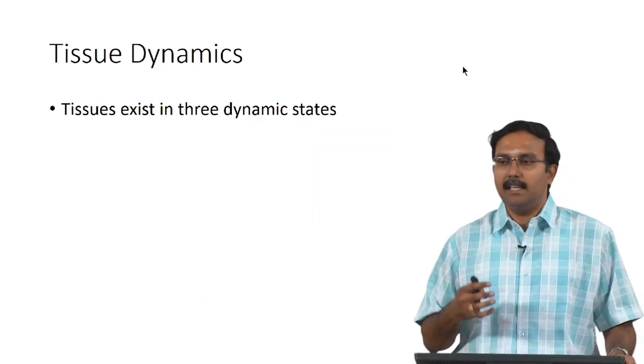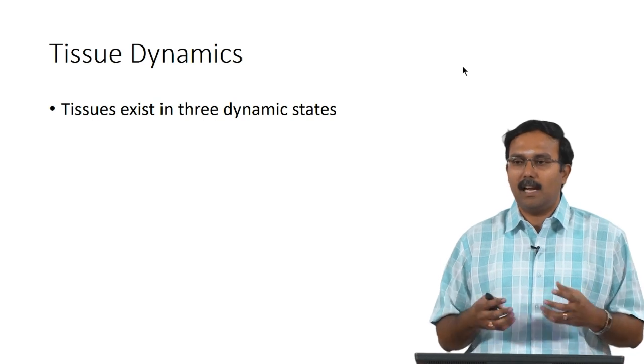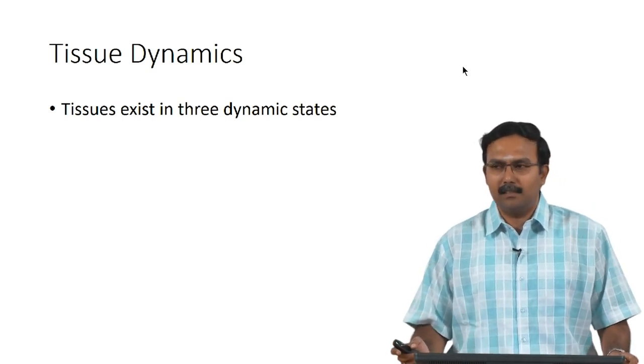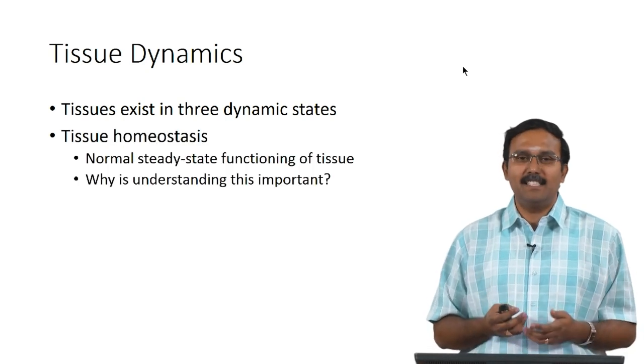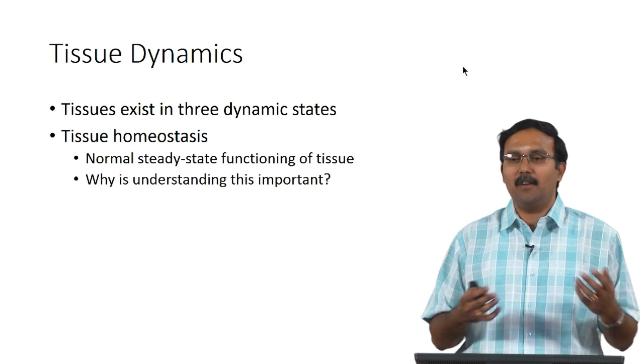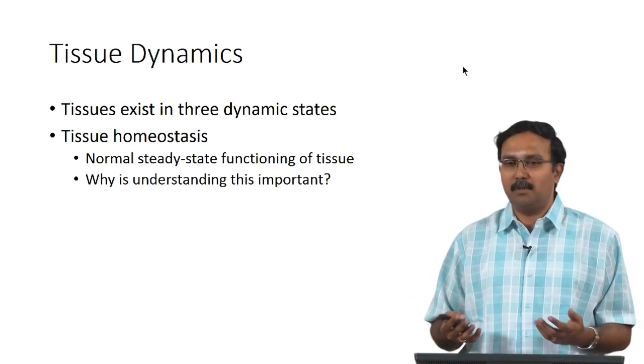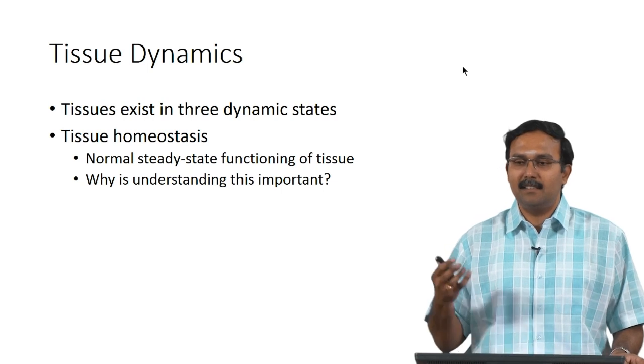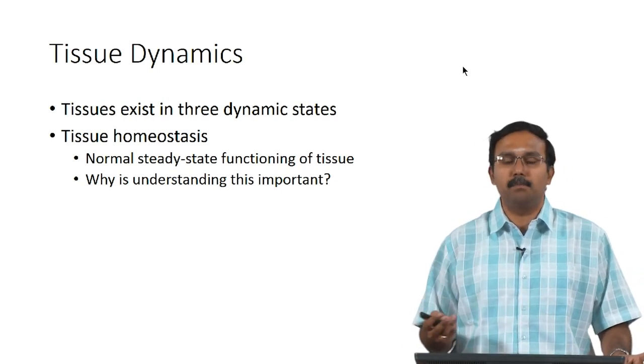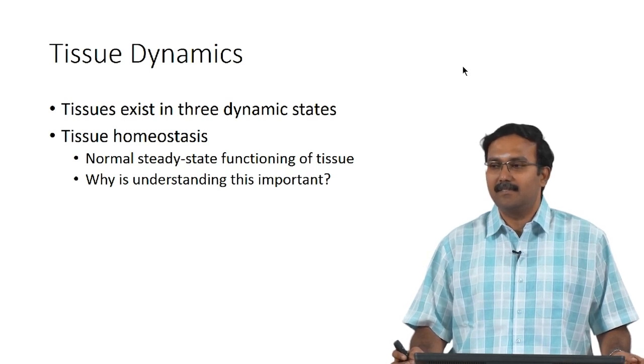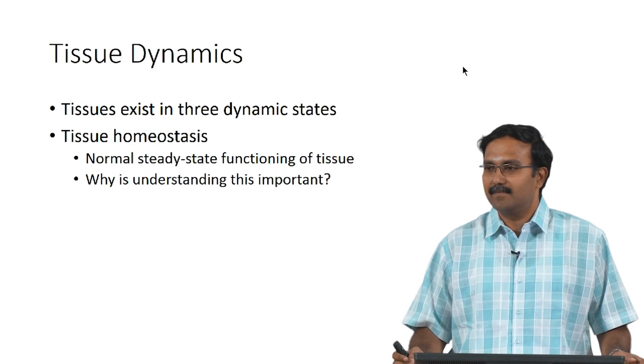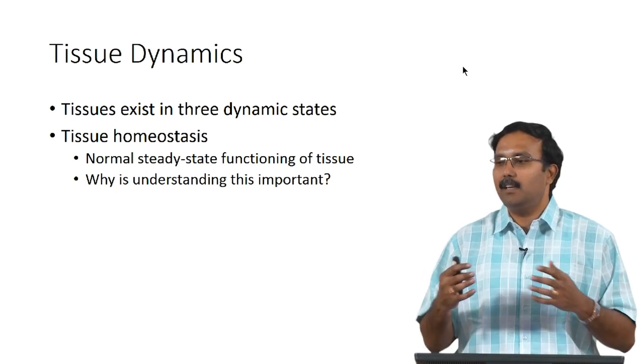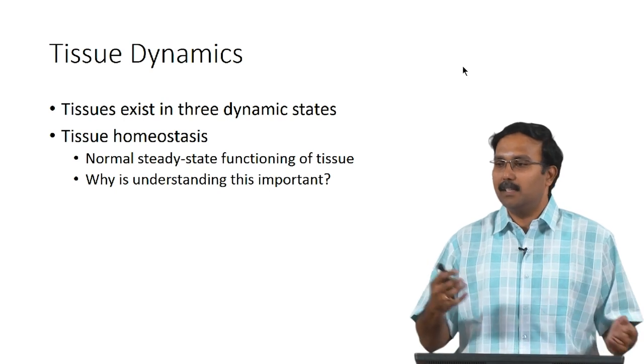Tissues can exist in three dynamic states. Tissues are not static; they can change in their status. The first is homeostatic, which is when it is at normal steady state functioning. The tissue is doing what it is supposed to do and is just existing in the system. Why is understanding this tissue homeostasis important from a tissue engineering perspective? We generally prefer the tissues in this condition. Ultimately the tissue has to exist in this condition after implantation. It is important to understand what its role is, what exactly it is doing, how the cells should behave, so that we can try to achieve it in our tissues.